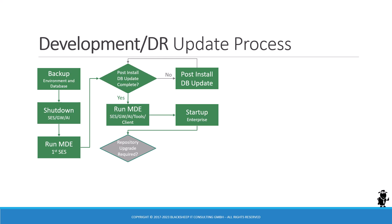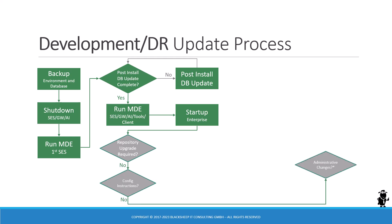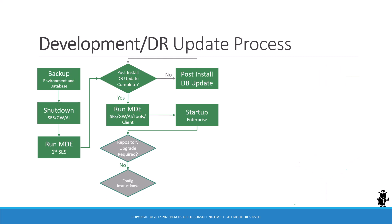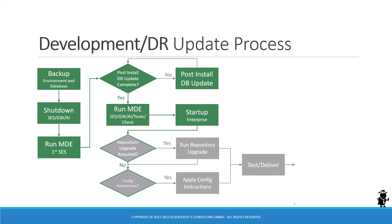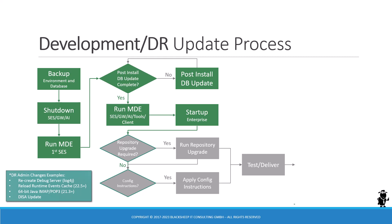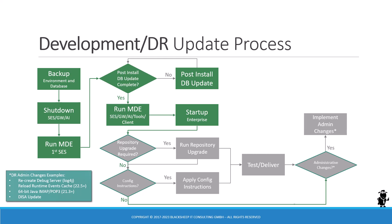On the fast track — if you don't need a repository upgrade, have no configuration instructions, and no administrative changes — you're done with the development update. If there is a longer path, and you've decided to run the repository upgrade, you run it and ensure it completes successfully. If there are configuration instructions, that's developer work in Web Tools too, and it must be tested and delivered. Administrative changes depend on your version and features in use; once those are implemented, the development update is complete.